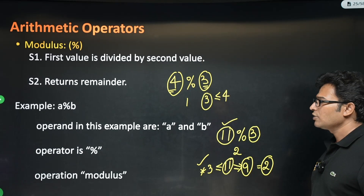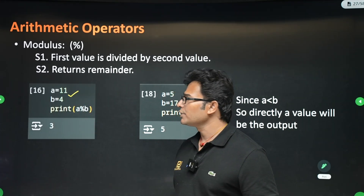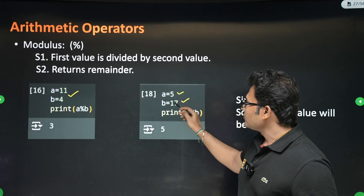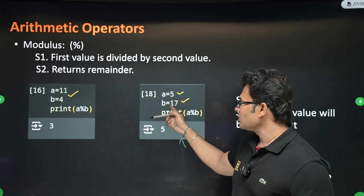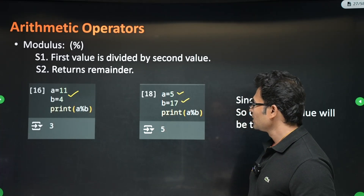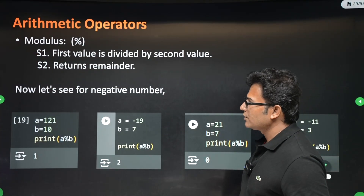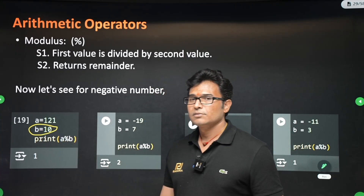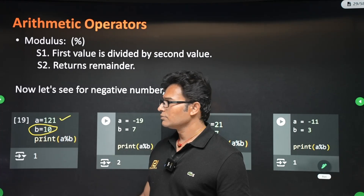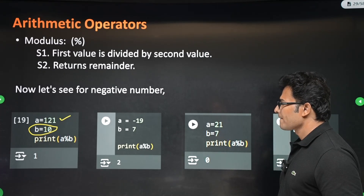For example, 11 modulo 4 is 3 (since 4 twos are 8, and 11 minus 8 is 3). Also, 5 modulo 17: whenever a is less than b, the answer is always a. And 121 modulo 10 is 1, because 120 equals 12 times 10, so the remainder is 1.